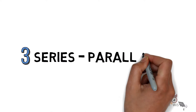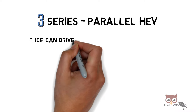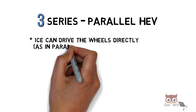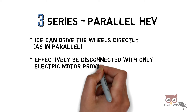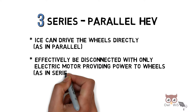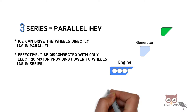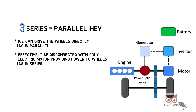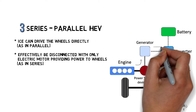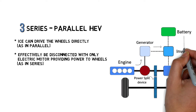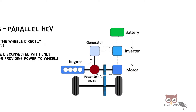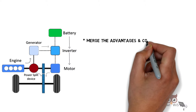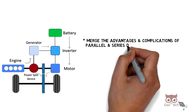Next, series-parallel HEV. Here the ICE can drive the wheels directly as in the case of parallel, and can also be effectively disconnected with only the electric motor providing power to the wheels, as in the case of series. The power flow occurs from the engine through a power split device to the wheels, then from engine to generator through inverter to battery, and then the battery provides power through inverter to motor to wheels.